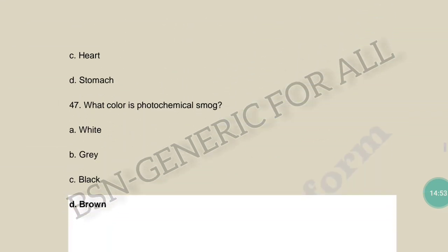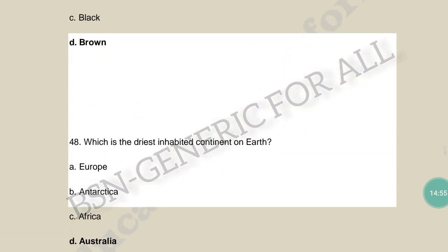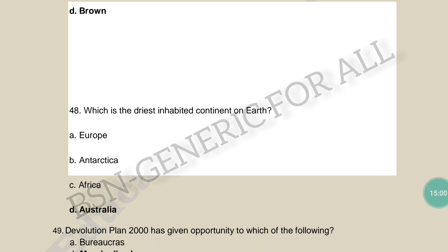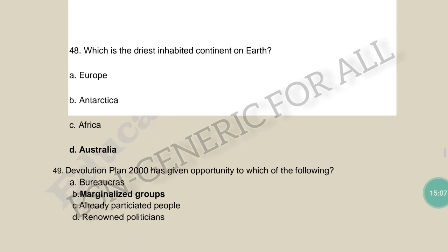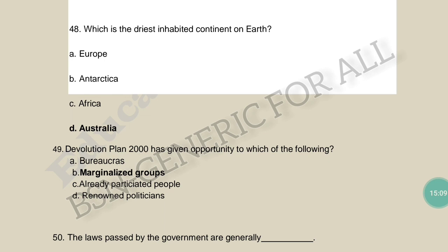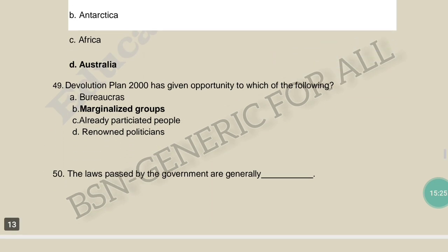What color is photochemical smog? Brown. Which is the driest inhabited continent on Earth? Australia. Devolution Plan 2000 gave opportunity to which group? Marginalized groups.